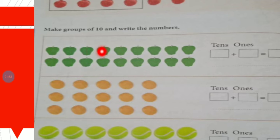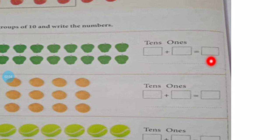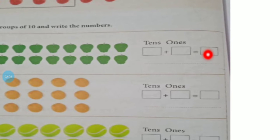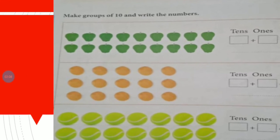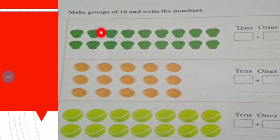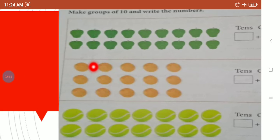Count the apples: one, two, three, four, five, six, seven, eight, nine, ten, eleven, twelve, thirteen, fourteen, fifteen, sixteen, seventeen, and eighteen. First write eighteen over here, then make a group of ten: one, two, three, four, five, six, seven, eight, nine, ten.